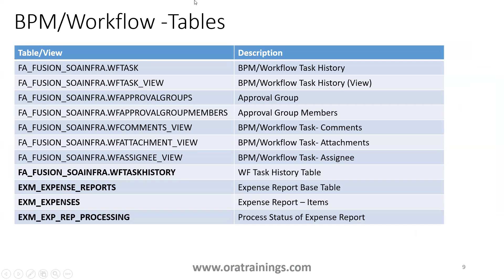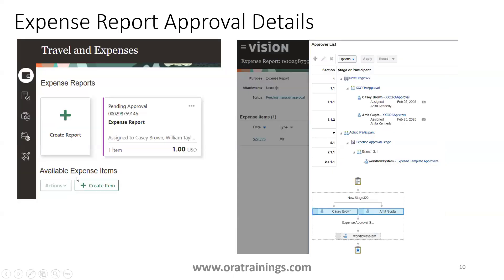Another source of information is the workflow tables. From the workflow tables you can find the status of your expense report, to whom it was submitted, who the remaining participants are, whether they have approved or rejected, or whether they are requesting more information. The key table is the workflow task history table, along with the EXM expense report-related tables, which also hold the final status.